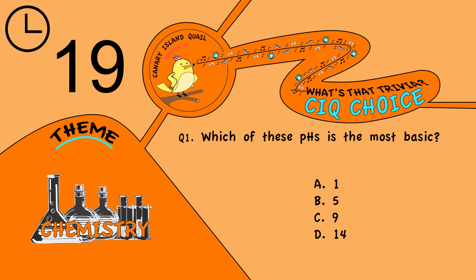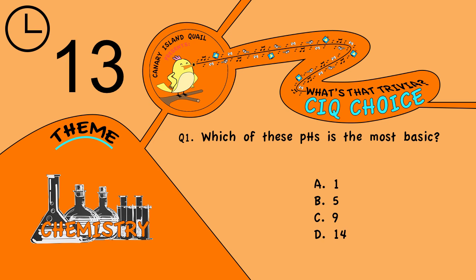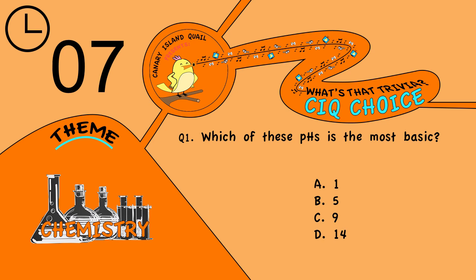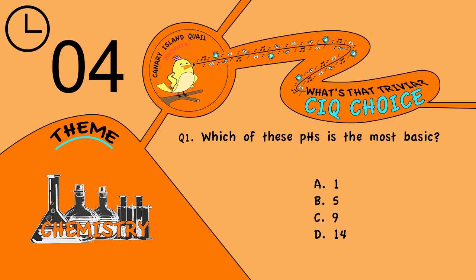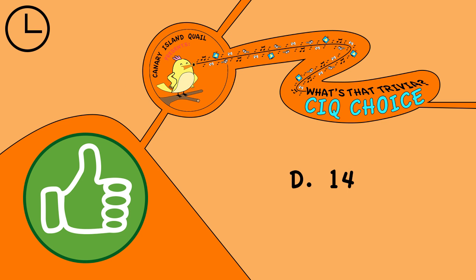Question 1. Which of these pHs is the most basic? Is it A, 1; B, 5; C, 9; or D, 14? The answer is D, 14.